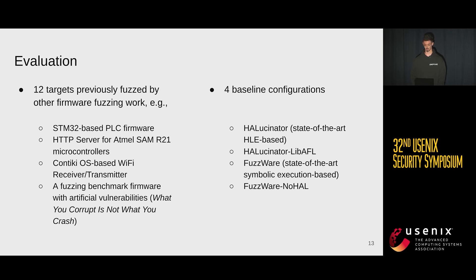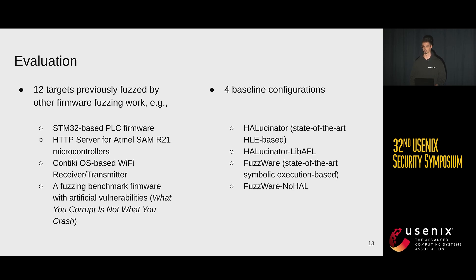The baselines are Hallucinator, which is state-of-the-art for high-level hooking, and Fuzzware, which is state-of-the-art for symbolic execution-based MMIO modeling. We also introduced Hallucinator+libAFL, which replaces the original legacy AFL used in the original Hallucinator paper with the same libAFL configuration we use in our framework, to eliminate that as the sole reason we might be better. For Fuzzware, we also count only basic blocks outside HAL functions, since hooking away HAL functions means we naturally cannot reach them — just to get a fair comparison.